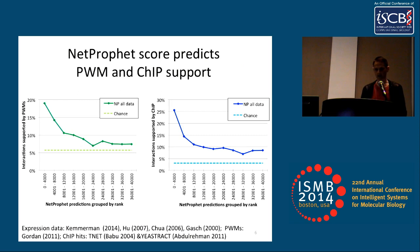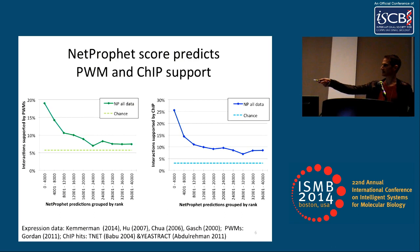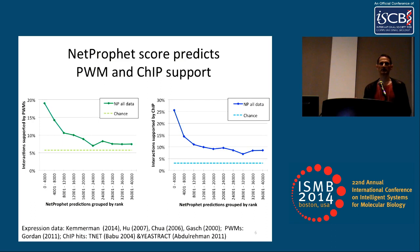On the left, you see the binding potential support for NETPROFIT for each bin of 4,000 transcription factor-target pairs from the top 4,000 down to 40,000. The nearly monotonic decrease in support as you go down the NETPROFIT list shows that the NETPROFIT score is a good predictor of support from binding potential. On the right, we held our noses and pretended CHIP could be used as a gold standard for evaluating NETPROFIT — and again we see the same nearly monotonic decrease, suggesting NETPROFIT score is also a good predictor of CHIP support.